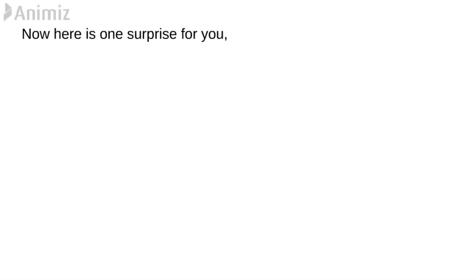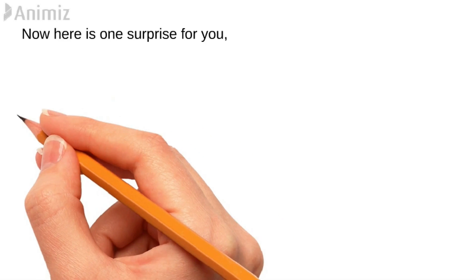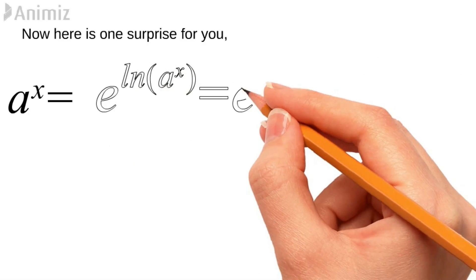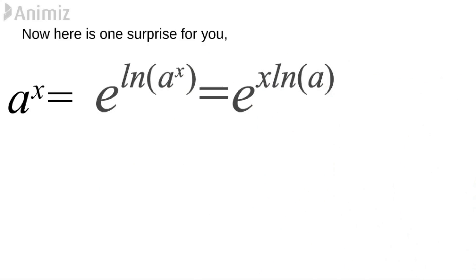Now it is time for a surprise. We do not always face e^x directly — sometimes we face forms like 2^x, 3^x, 10^x, or 100^x. We can write a^x as e^(ln(a^x)). Here, ln is the log with natural base e, and since the power in the argument of a log comes out of the log, we can write it as e^(x·ln a).